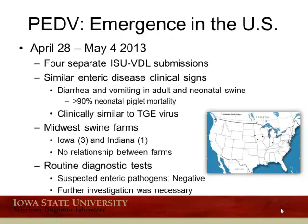Regarding the emergence of PED in the U.S. and the Iowa State Diagnostic Lab experience, during the four days between April 28th and May 4th we had four separate ISU VDL submissions that occurred about at the same time. These all reported similar clinical disease involving enteric clinical signs — diarrhea and vomiting being the primary sign in adult and neonatal swine — with greater than 90 percent neonatal piglet mortality, looking clinically similar to TGE virus. These were Midwest swine farms, three in Iowa and one in southern Indiana, with no relationship established between the farms. Routine diagnostic testing for suspected enteric pathogens were negative, prompting further investigation.